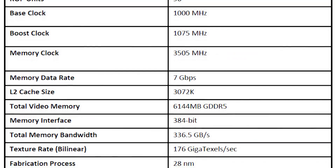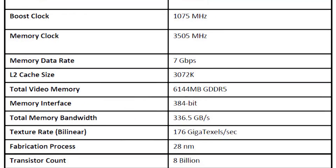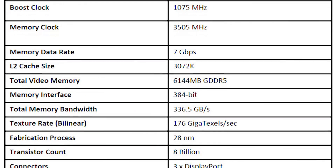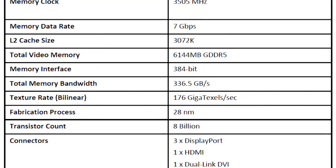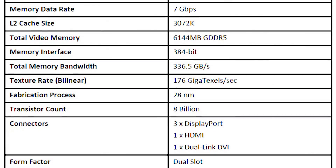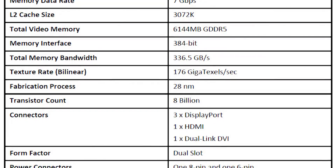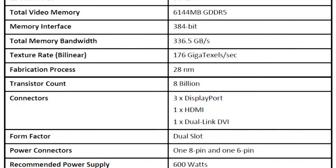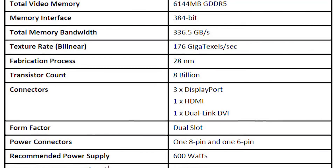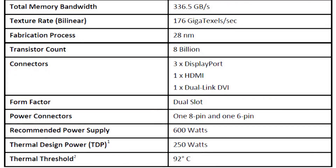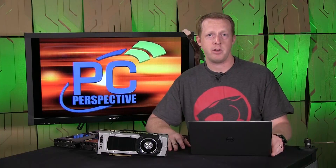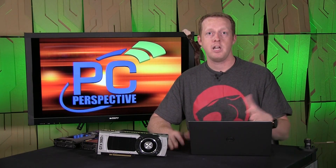It also drops to 172 texture units. Everything else is the same in terms of GPU specifications — you've got the same number of ROPs, you've still got a 384-bit memory bus. What does change here, though, is the amount of memory. Instead of having 12 gigs of memory, which at the time seemed like an insane amount of graphics memory for a GPU, this has 6 gigs.